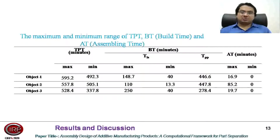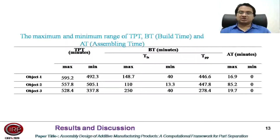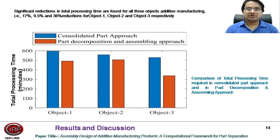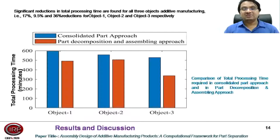Results are also analyzed in terms of maximum and minimum range of total processing time, build time, and assembling time. It is found that time spent in layer spreading affects the total processing time the most, and some effect comes from assembling time as well. There is a huge gap between the maximum and minimum range of total processing time for all three objects. It is found that the part decomposition and assembling approach reduces total processing time for all three objects: 17%, 9.5%, and 36% reductions are seen for objects one, two, and three respectively.